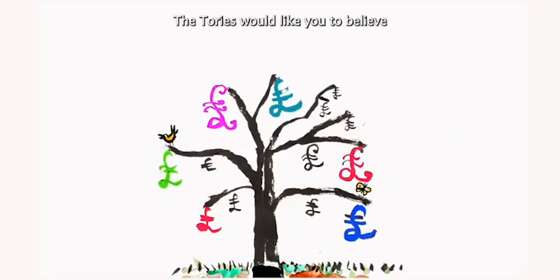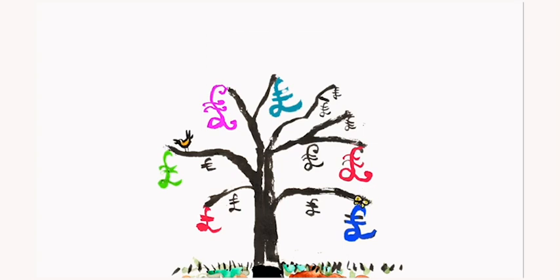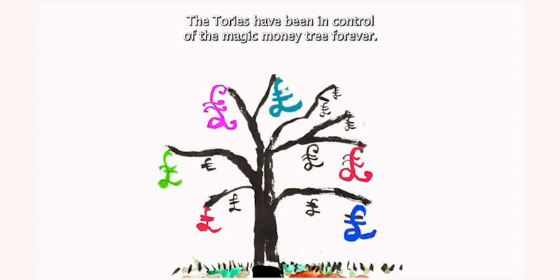The Tories would like you to believe that there is no magic money tree. But that is not true. The Tories have been in control of the magic money tree forever.